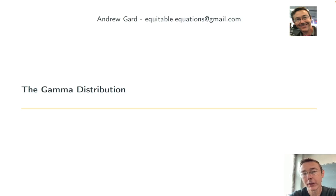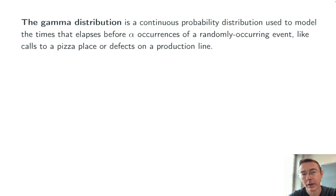Hey everybody, today we're talking about the gamma distribution. This is a continuous probability distribution that's most frequently used to model waiting time for a certain number, call it alpha, of occurrences of a randomly occurring event, like calls to a pizza place or defects in a production line.